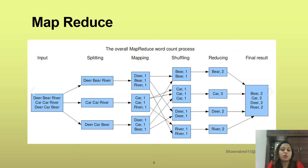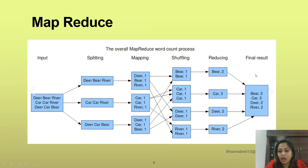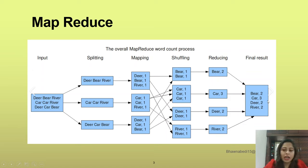In MapReduce, you actually have to do a transformation on this input. In the final output, you need to count the number of each word. So for example, deer has come two times. In the output you have deer comma two, and car has come three times, so in the final output you have car with a count of three. This is essentially the count operation you are doing on the data.